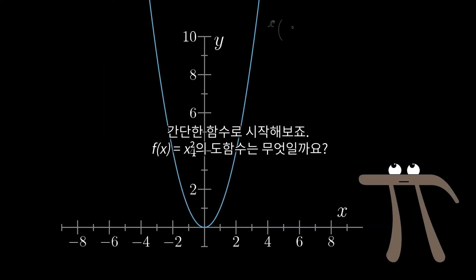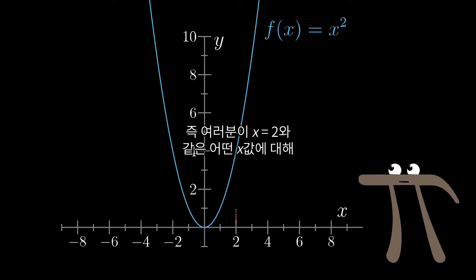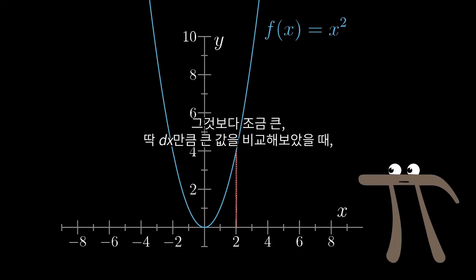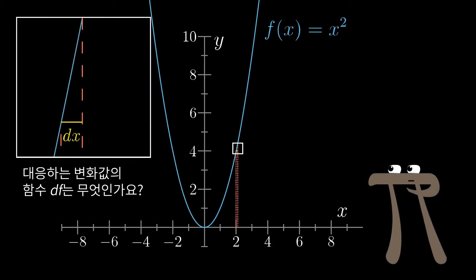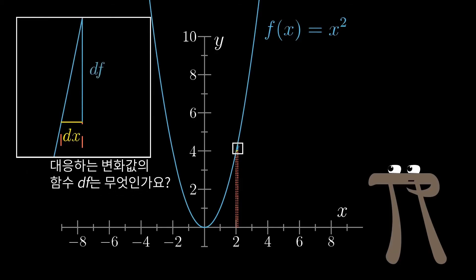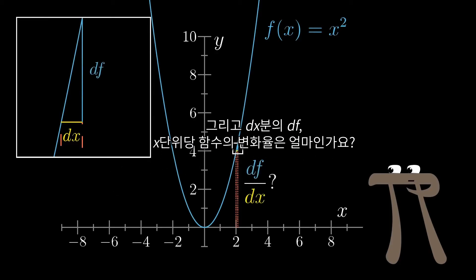Let's start with a simple function, like f of x equals x squared. What if I asked you its derivative? That is, if you were to look at some value x, like x equals 2, and compare it to a value slightly bigger, just dx bigger, what's the corresponding change in the value of the function, df? And in particular, what's df divided by dx, the rate at which this function is changing per unit change in x?